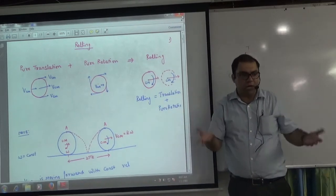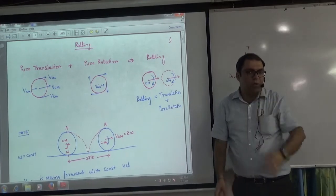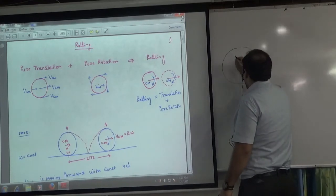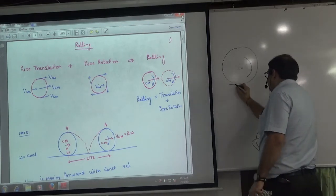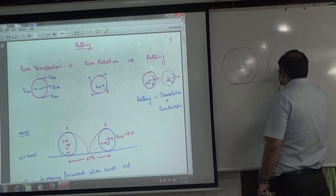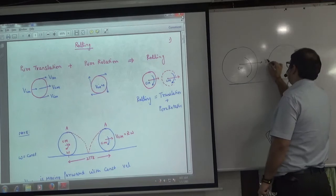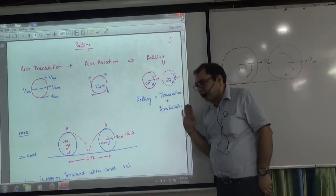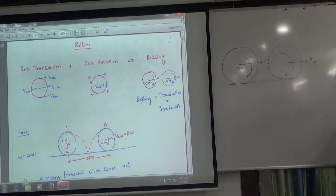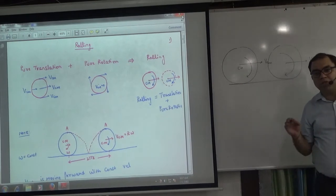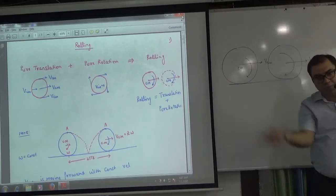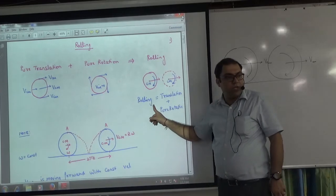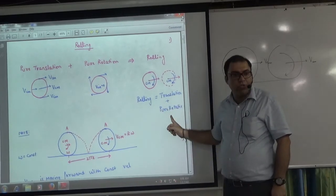When you see a tire rolling on the road, observe the center of mass. Imagine this is a tire — the center of mass is marked. When the tire rotates and rolls, the tire changes its position. So the center of mass is moving forward in translation motion. And at the same time, the other particles are rotating around the center. Rolling is a combination of translation and pure rotation.